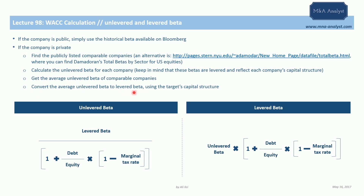Once we have the average unlevered beta, we lever it using the target company's capital structure. To summarize: for a private company, find comparable public peers, get their levered beta figures, unlever each of them, take the average of those unlevered betas, and then re-lever that average using the target's capital structure.